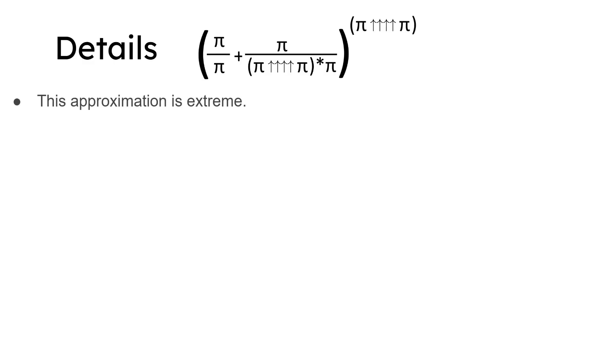Here's a detail. This approximation is extreme. It means that x is, there's this formula 1 plus 1 over x to the power of x, the bigger the x, the closer to E.